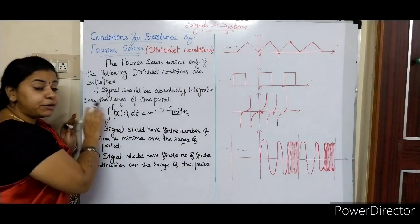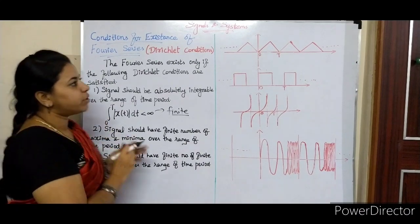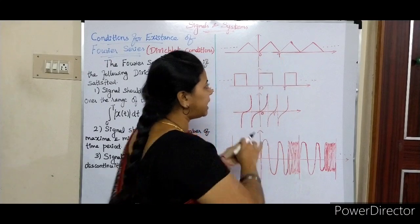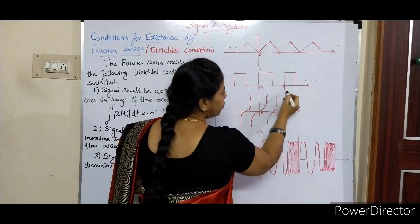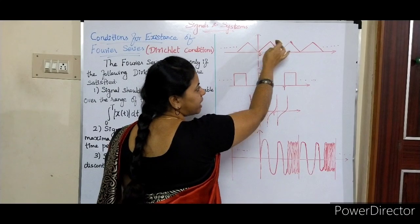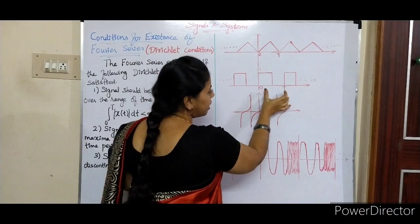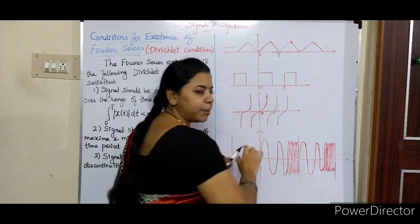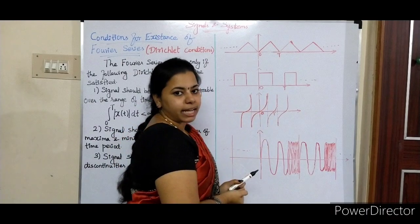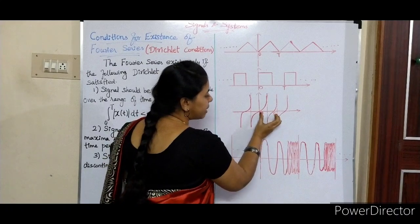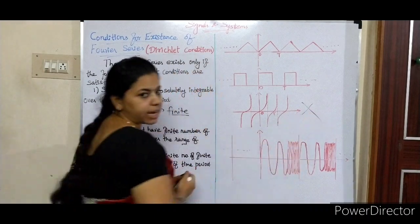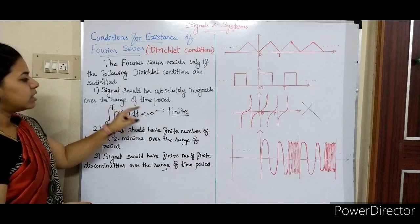You integrate over one complete cycle — from 0 to T, which is one complete period. If the signal has a finite amplitude, when you integrate over 0 to T you will get a finite answer. But if the signal has infinite amplitude, when you integrate that part you will get an infinite value. So for the first condition, the integral must give a finite value.